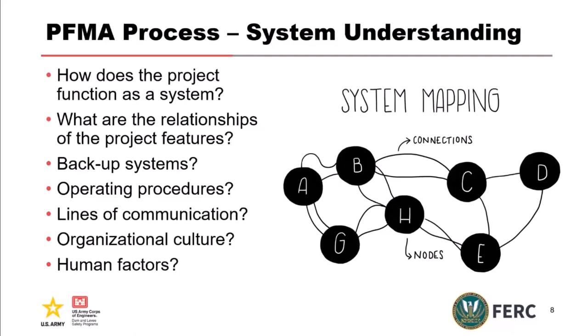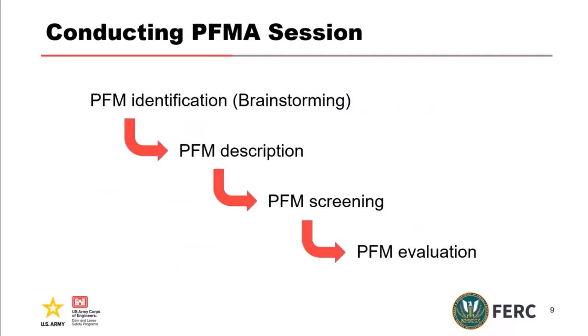Within the session, the first step is trying to identify individual failure modes and describe them so that all team members understand each one individually. Then we go through the screening process, because as we identify failure modes, we might have tens or even hundreds to evaluate. Not all failure modes are created equal — we want to screen them so we're spending our energy and resources on those that will make a difference, and move the others out of the way. Then we evaluate them.